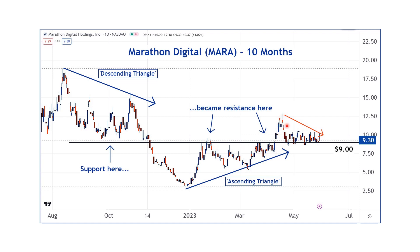Now, what do we have here? Another descending triangle is starting to form. The buyers are hanging out around nine. But as time is passing from April to where we are now, there's been a series of lower highs. This tells us that the sellers are getting more aggressive. Aggressive sellers, complacent buyers — sets the stage for a move lower. To sum up, if you look at a chart correctly, it should be an illustration of supply and demand dynamics and market psychology. Buyer's remorse turns support into resistance. Seller's remorse turns resistance into support. Descending triangle shows aggressive sellers and complacent buyers. Ascending triangle shows complacent sellers and aggressive buyers.